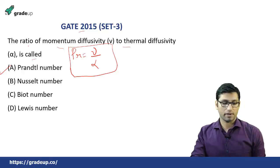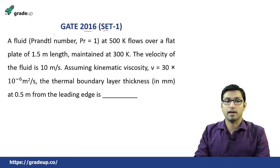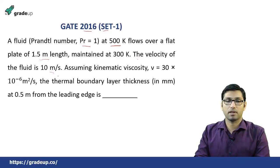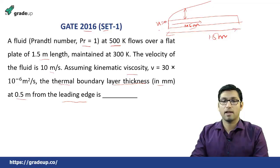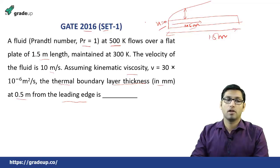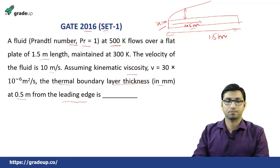Next question from GATE 2016 Set 1. A fluid with Prandtl number of 1 at 500 K flows over a flat plate of 1.5 meter length. The fluid velocity is 10 m/s and kinematic viscosity is given. You have to find the thermal boundary layer thickness in mm at 0.5 meter from the leading edge. Since Prandtl number equals 1, we know δ/δT = 1, meaning δ = δT.